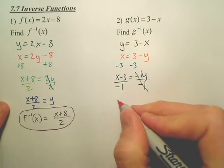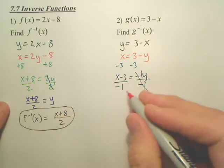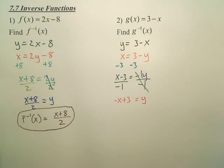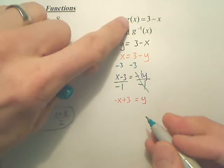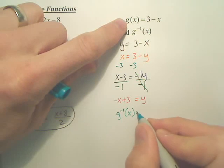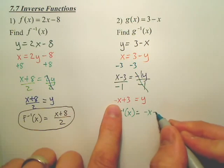And you now have, and this one I could actually simplify, is negative x plus 3. And then change it back to the inverse. And we're doing g. So the inverse of g is negative x plus 3.